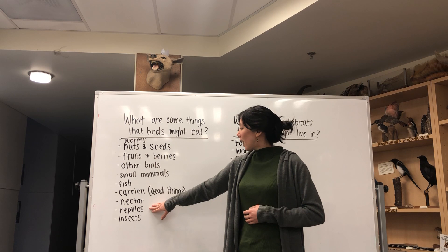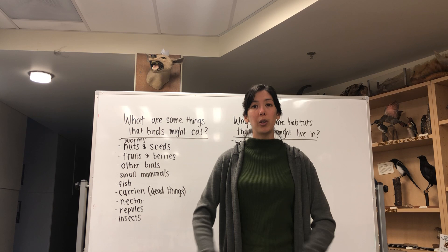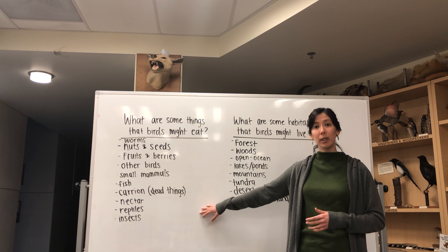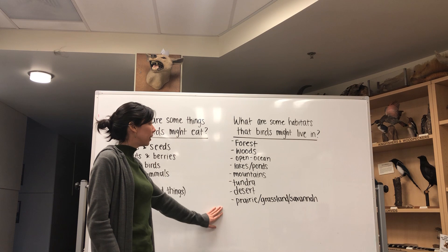Lastly we have reptiles and insects. Some birds eat things like snakes and lizards, and insects of any sort — whether living on the ground or flying in the air. Go ahead and add anything you didn't have on your list, and then we'll move on to our second question: what are some habitats that birds might live in?